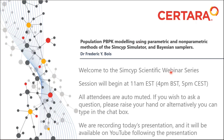I will do the introduction. After that, if David can read the questions. Today's seminar, I will present population PBPK modeling — a combination of population modeling and statistical approach with PBPK modeling. We use the parametric and non-parametric methods available in SIMSIP and compared them to Bayesian samplers, which had the double advantage of checking whether the SIMSIP simulator works similarly to Bayesian samplers, and verifying that results are coherent.